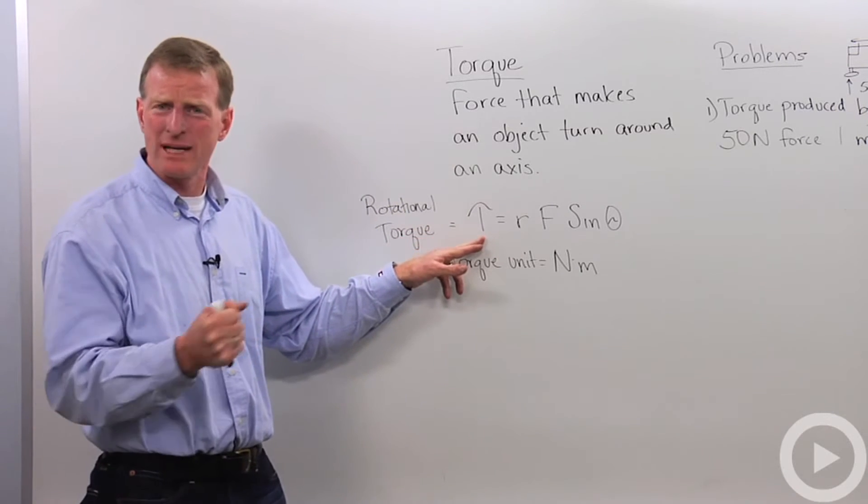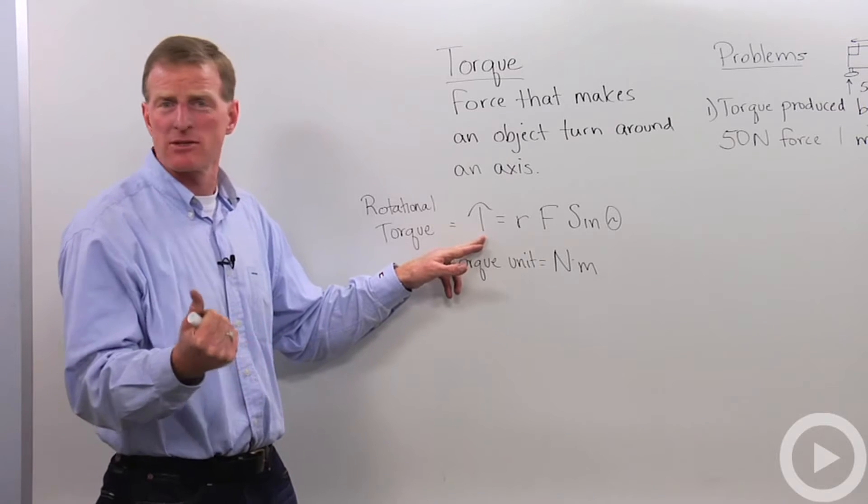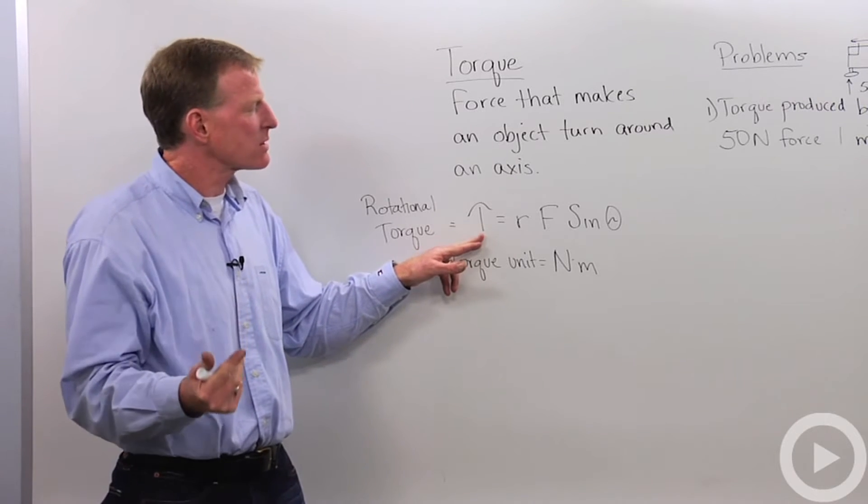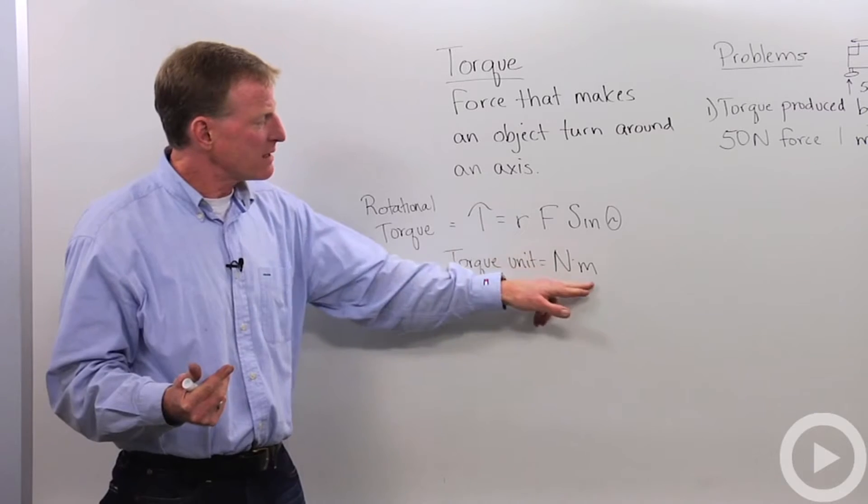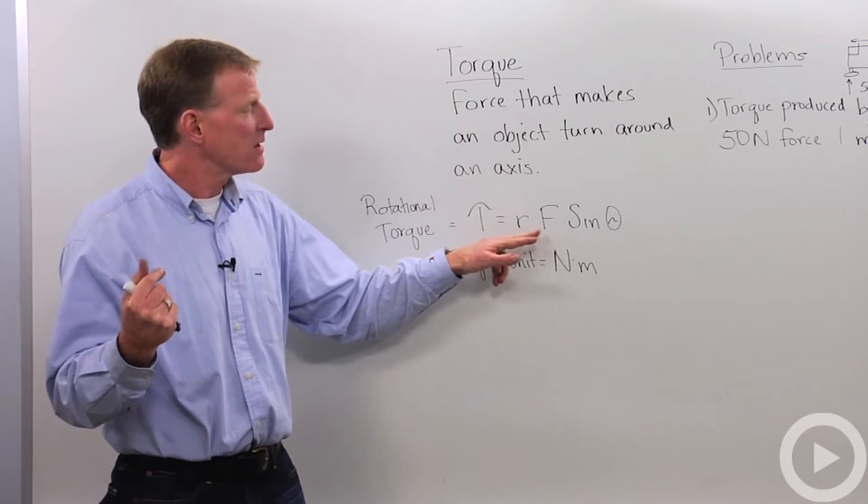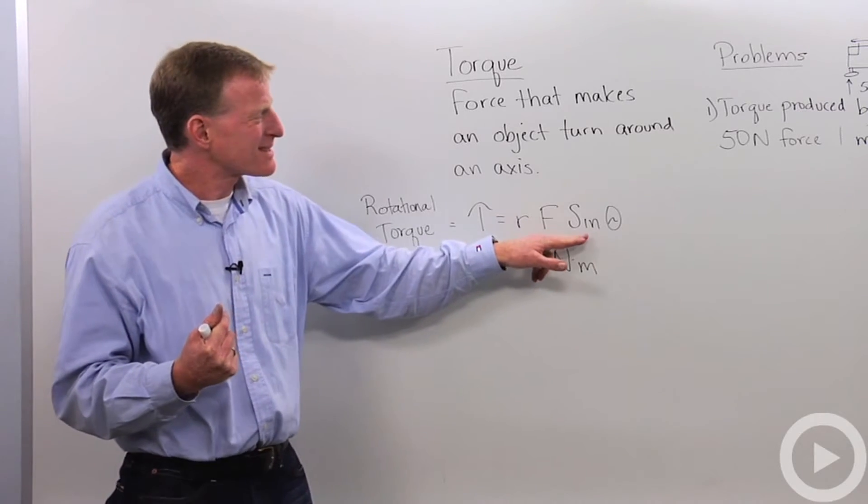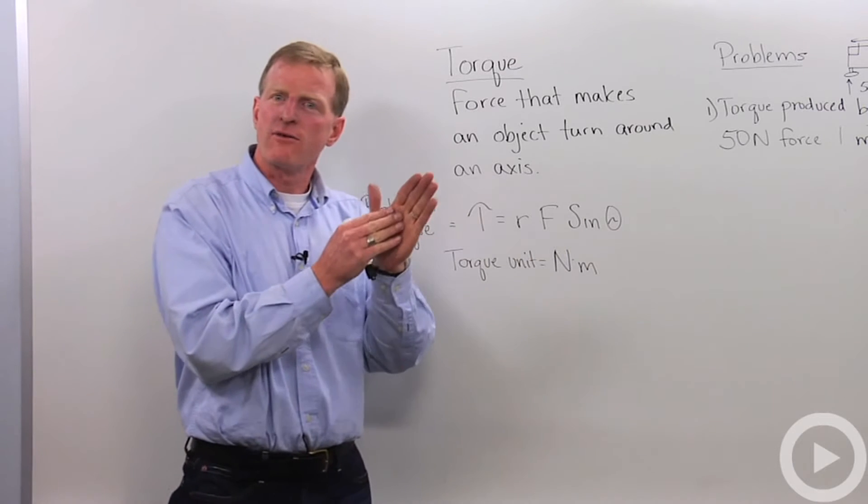So the formula we're going to use for that, torque, this is actually a Greek T called a tau, sometimes it's written as a regular T, but torque is equal to the radius, that's the distance from the center, times the force, times the sine of the force that's applied.